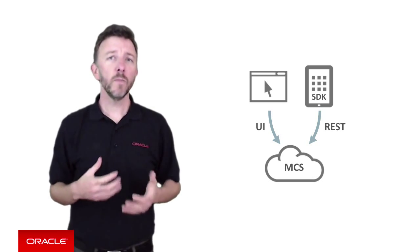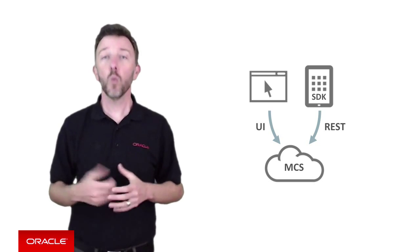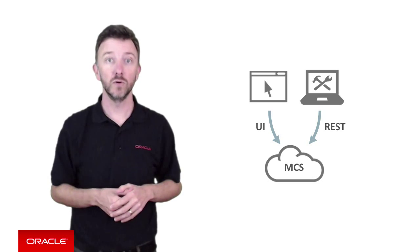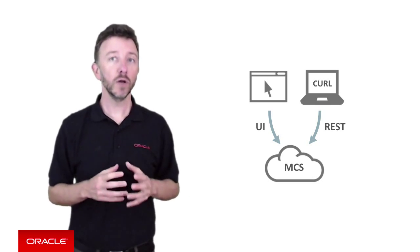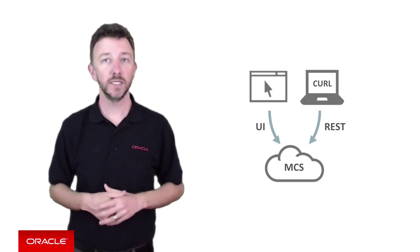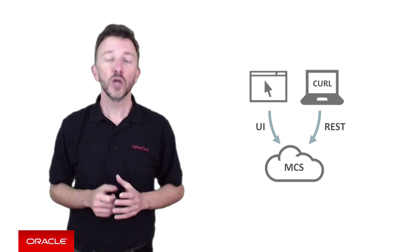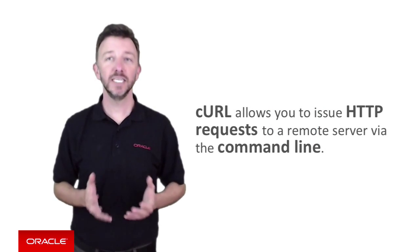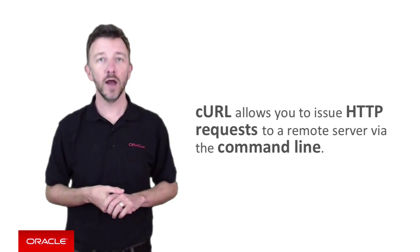Because the mobile backend services are exposed as REST services, luckily you have a wealth of tools designed to test REST services remotely. One such example is the ever-handy cURL command line tool, natively available on Linux and Mac systems and downloadable as an extension for Windows. cURL, amongst many functions, allows you to issue HTTP requests to a remote server such as MCS from the command line.